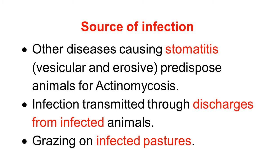Regarding the source of infection: domestic animals are affected by many organisms — viral, bacterial, and fungal — that produce stomatitis, especially vesicular and erosive stomatitis. These cause injury to the mouth and stress on the buccal mucosa, predisposing the animal to actinomycosis. If an actinomycosis-infected animal is present, it will transmit infection to other animals through discharge. When this discharge falls on grazing pasture, other animals grazing on such pasture may also acquire the disease.